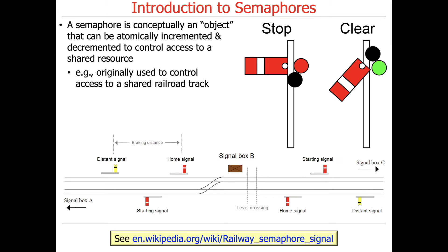Originally, semaphores were designed to control access to things like shared railroad tracks. They're very widely used in Europe, India, and Asia. A lot of times tracks are shared because you can't have double tracks everywhere. So you need to make sure that two trains don't share the same track and collide. Railway semaphore signaling mechanisms indicate when the track is in use and you need to stop, and when the track is clear and you can go — stop and clear.